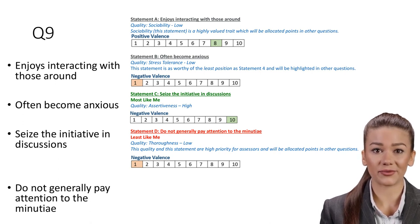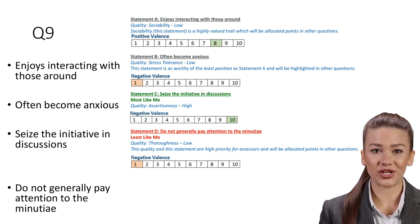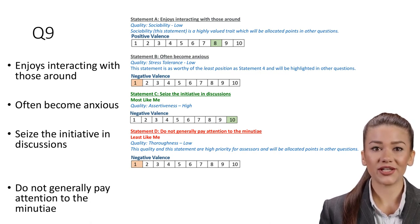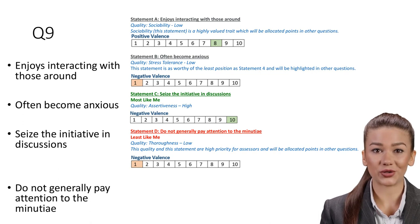Statement B: Often become anxious. Quality: Stress tolerance, Low. When work stress feels relentless or chronically intense, it can be overwhelming and harmful to both physical and emotional health as well as ultimately to work performance. Resilience is learning to glide through the everyday workload pressures without being overwhelmed. This statement is as worthy of the least position as statement D and will be highlighted in other questions.